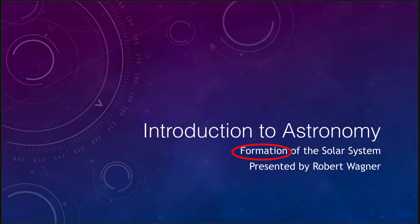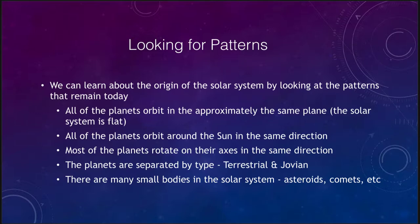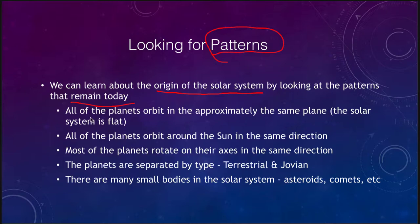Let's get started with some of the patterns that we see in the solar system. These patterns are quite important because we can learn about the origin of the solar system by looking at what remains today. What we notice is that all of the planets orbit in approximately the same plane, meaning the solar system is flat. If you draw the solar system on a piece of paper, that is really not a bad approximation.